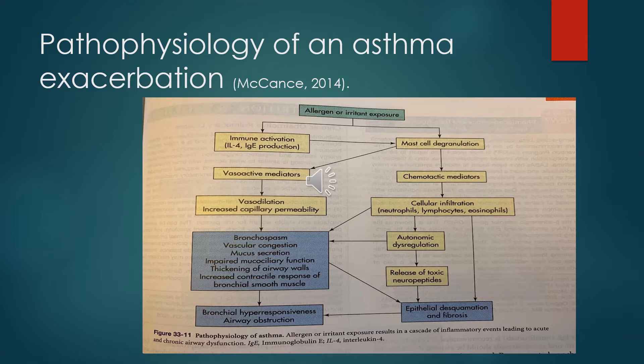With these occurrences, what happens is bronchospasm, vascular congestion, increased mucus secretion, impaired mucociliary function, which can lead to thickening of airway walls, increased contractile response of bronchial smooth muscle, with ultimately bronchial hyperresponsiveness and airway obstruction.